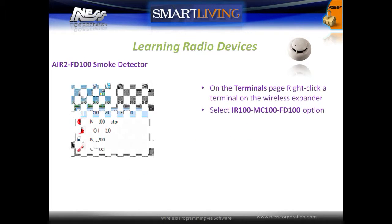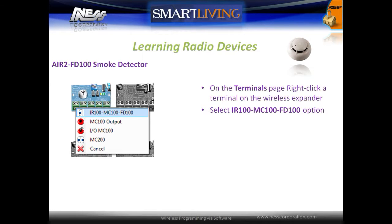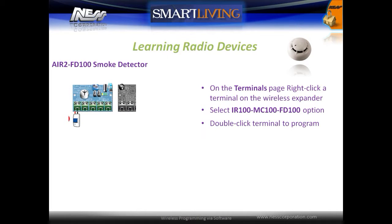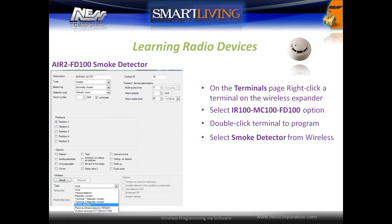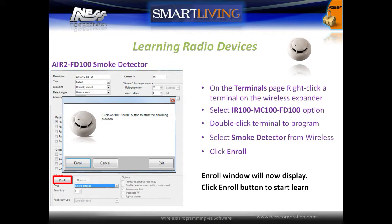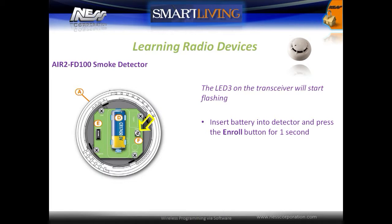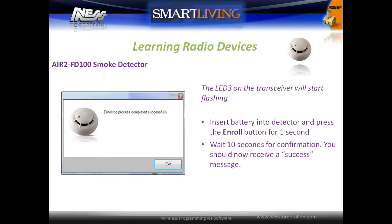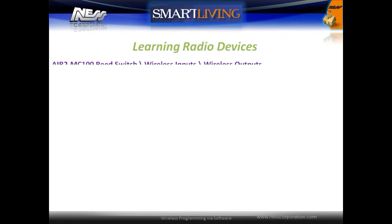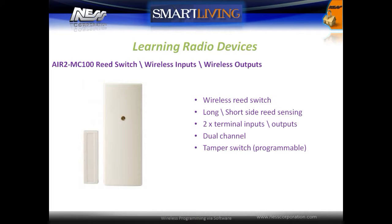On the terminals page, right click on a terminal on the wireless expander to enroll the sensor into, and select the IR100 option. Double click the terminal to open the programming window. Under the wireless programming section, select the type as smoke detector. Click the enroll button to enroll the detector. Once the system is in enroll mode, the transceiver's LED 3 will start to flash — press the enroll button on the device. After about 10 seconds, a message should confirm that the device was enrolled successfully.